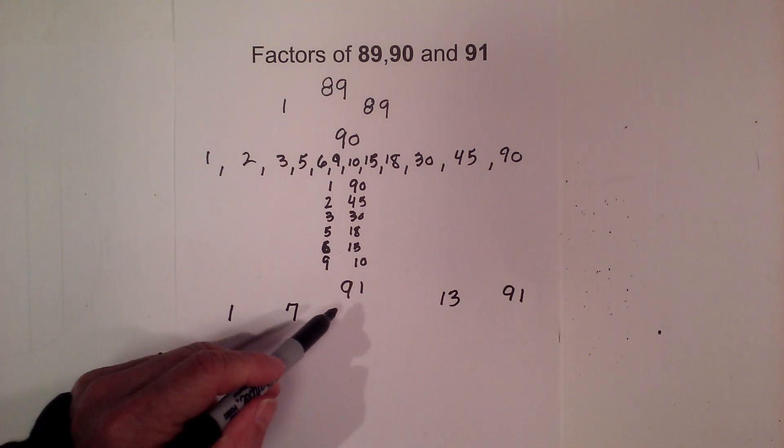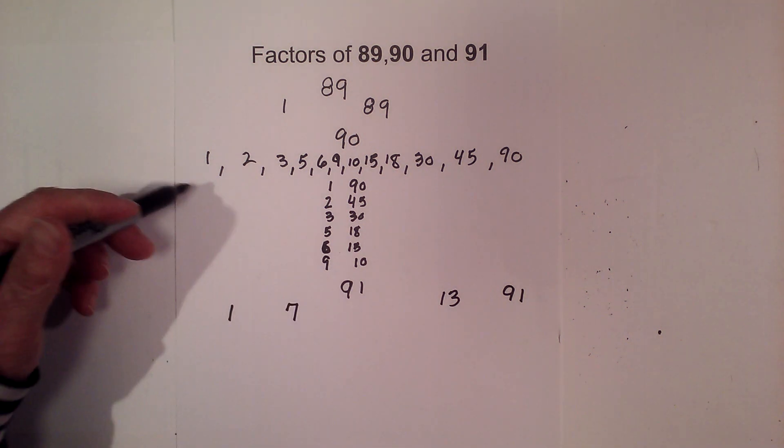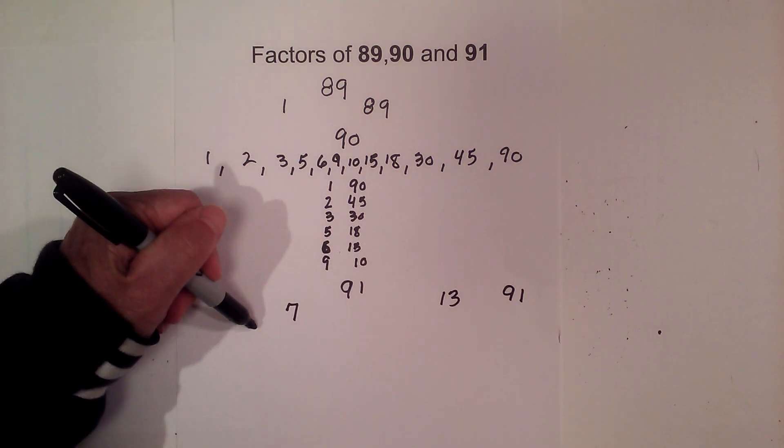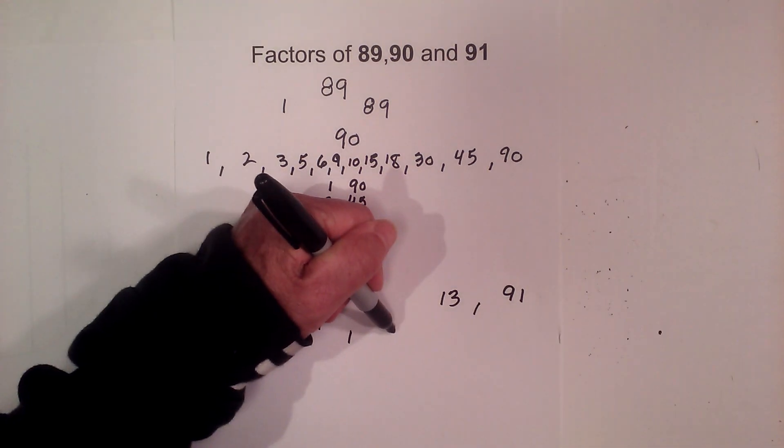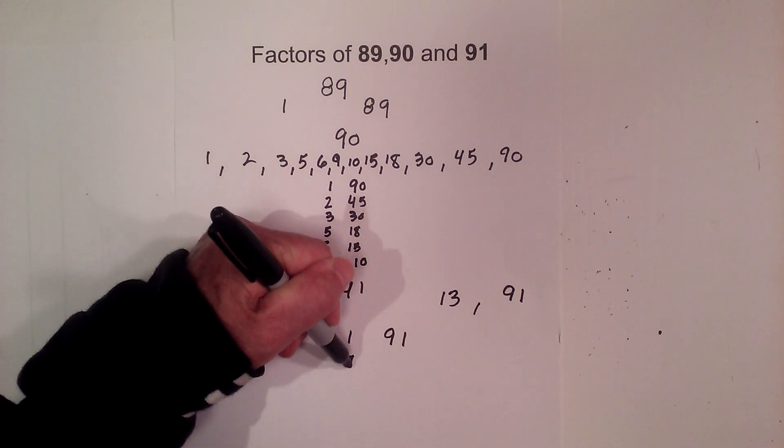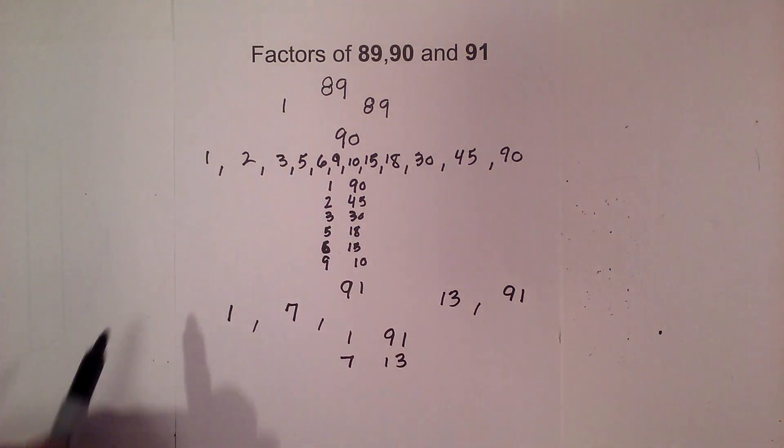And then 8, 9, 10, 11, or 12 do not go in. So the factors of 91 are 1, 7, 13, and 91. And the pairs are 1 times 91, 7 times 13.